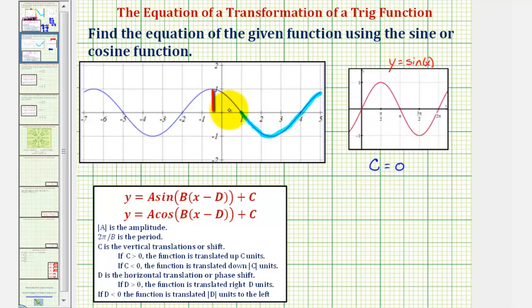Also notice the distance from the midline to the maximum function value, or minimum function value, is positive 1, so we know the amplitude is positive 1. But again, because we have a minimum function value here, rather than a maximum function value like we normally have for the basic sine function, a is not positive 1, a is negative 1.